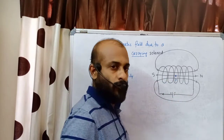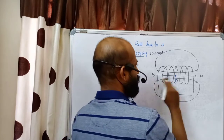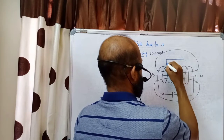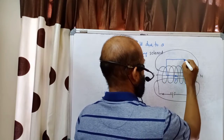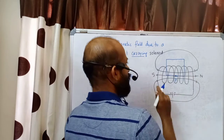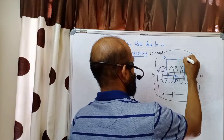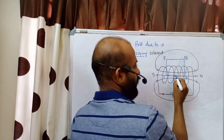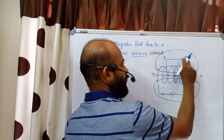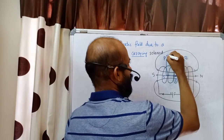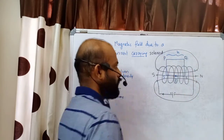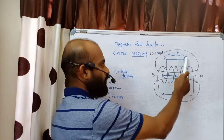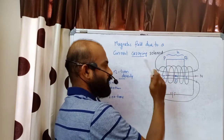We assume a rectangular Ampere loop with corners P, Q, R, and S. The length of side PQ is h. There are four sides: PQ, QR, RS, and SP. The internal direction of the magnetic field is from south to north along the axis of the solenoid.